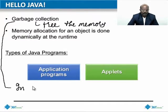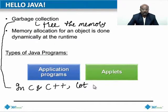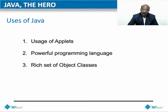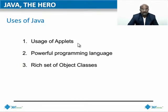Different types of Java programs are application programs and applets. Java is one of the most powerful programming languages, a high-level programming language, and it has a rich set of object classes.